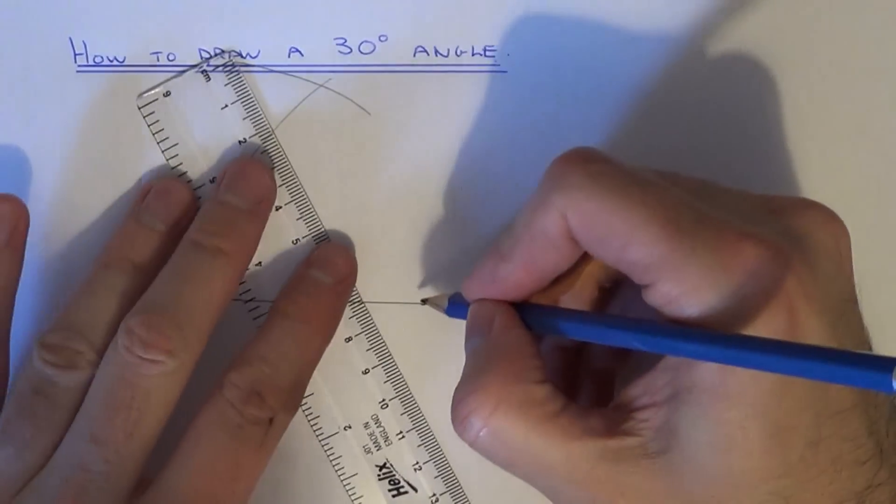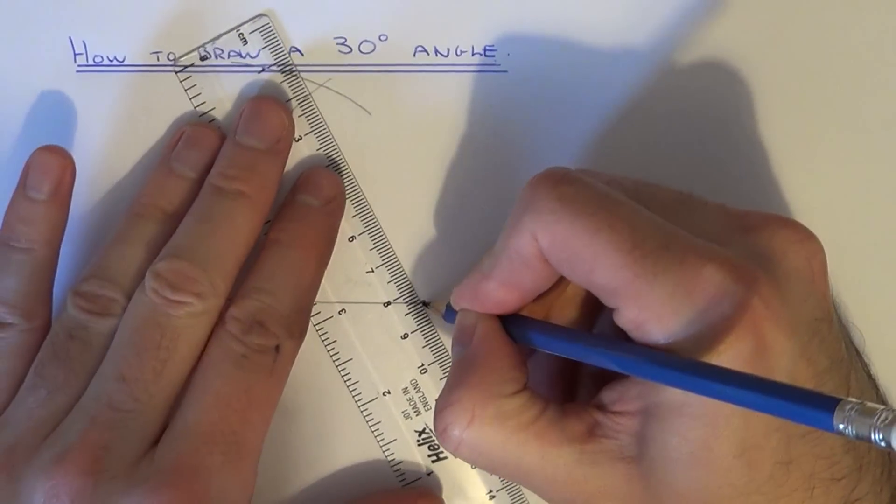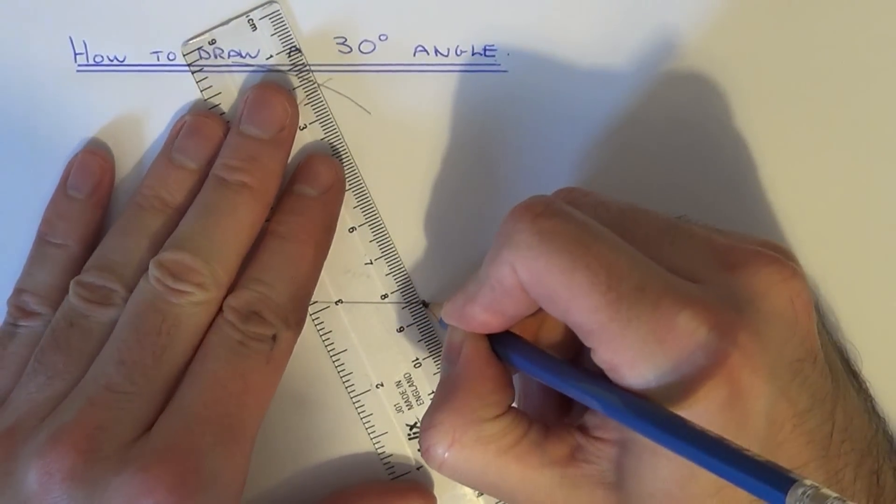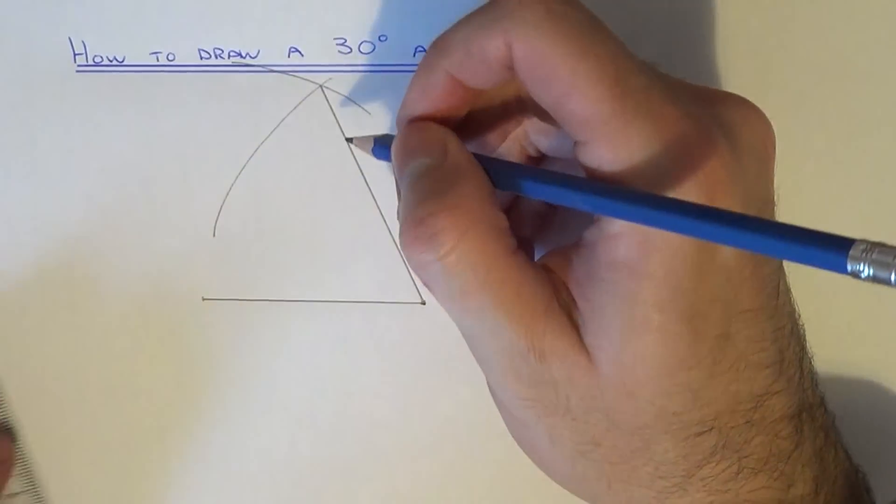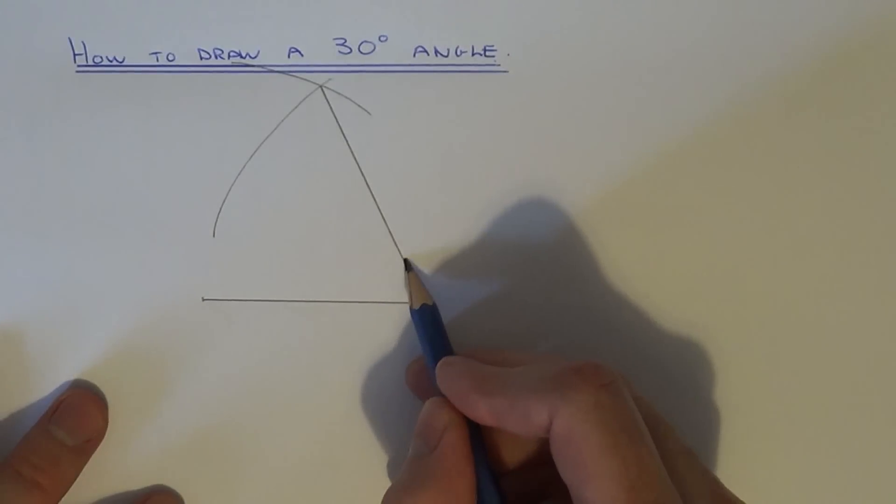So if you join the right hand side of the line to the intersection of the two arcs, this angle here will be 60 degrees.